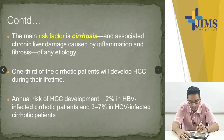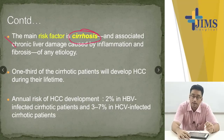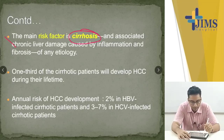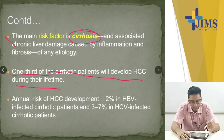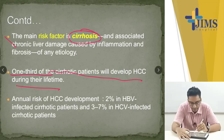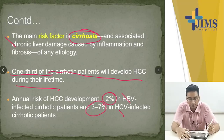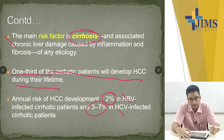The main risk factor is cirrhosis due to chronic liver disease — cirrhosis due to any cause except Wilson's disease. One third of cirrhotic patients will develop HCC during their lifetime. Importantly, HBV-infected patients have a 2% annual risk, but HCV-infected patients have 3 to 7%, so the carcinogenic potential of HCV is more than HBV.